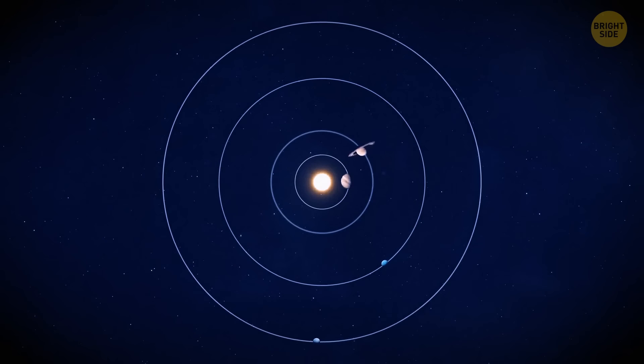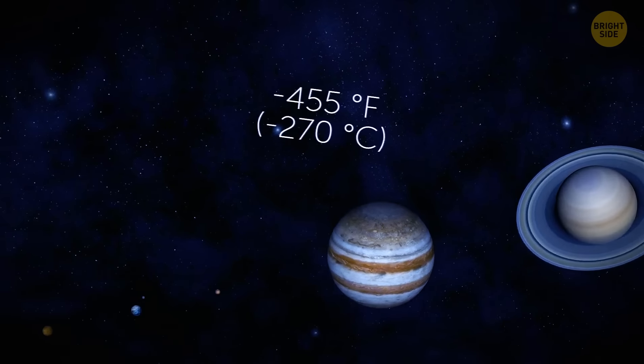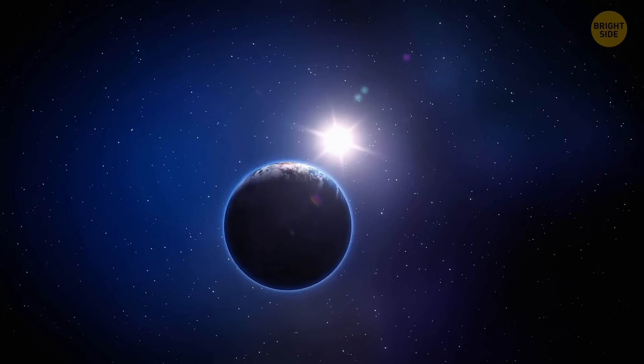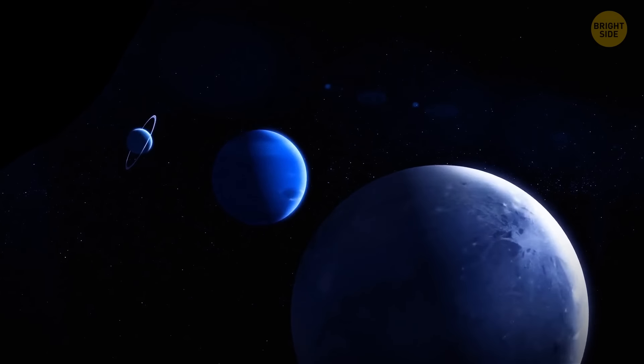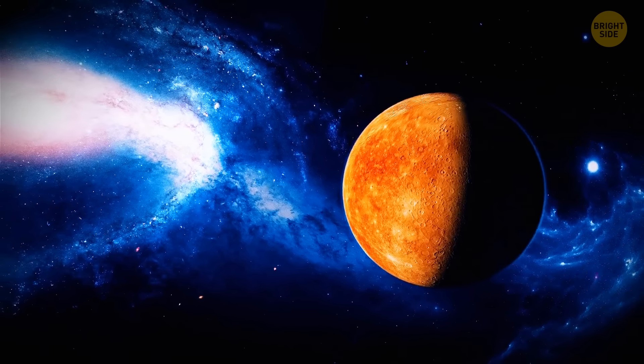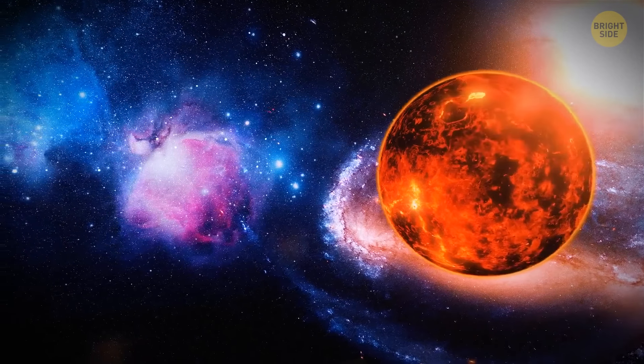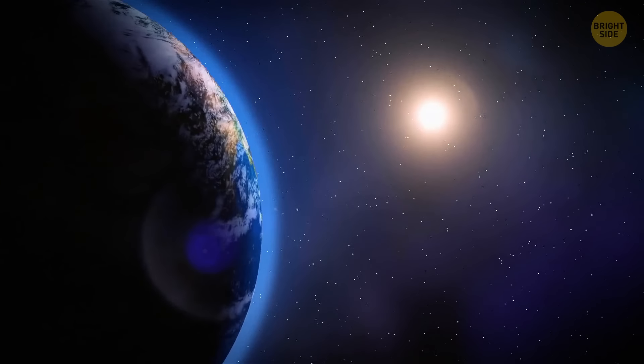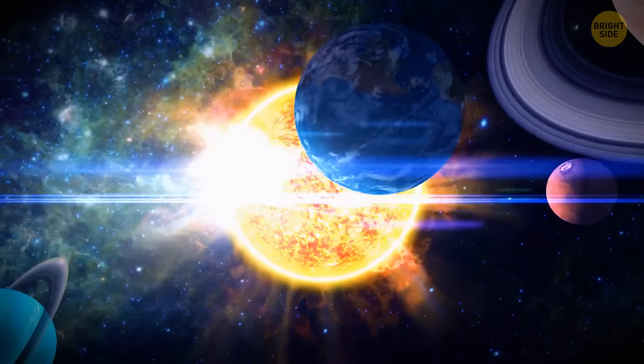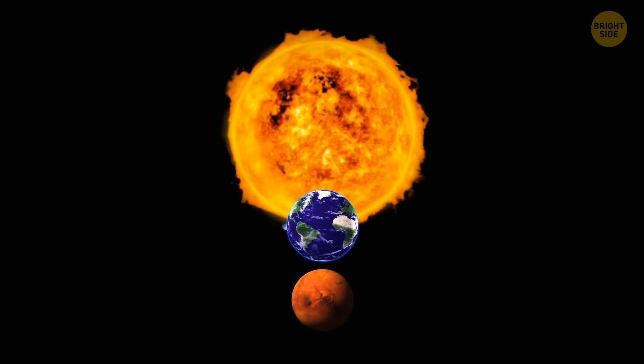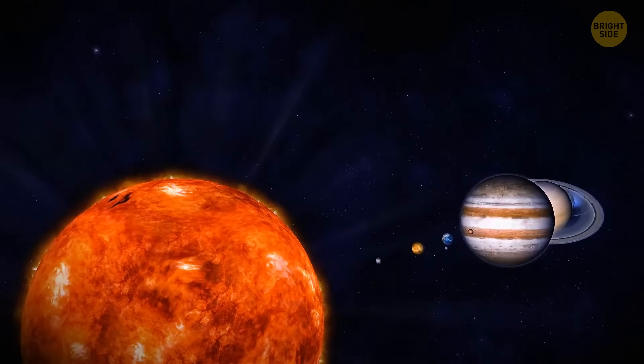Without the sun, planets would be pretty chilly. We're talking about temperatures as low as negative 455 degrees Fahrenheit. But with the sun around, the planets get to enjoy much more livable temperatures. Of course, not all planets are created equal. Mercury, for example, is the closest to the sun. Venus, on the other hand, is farther away, but somehow manages to be even hotter than Mercury. The distance from the sun isn't the only factor that affects a planet's temperature. Other things, like the planet's size and reflectivity, also come into play. So Mercury being the hottest planet in our solar system is a false proposition. No, just because it's the closest one to the sun doesn't mean it's the hottest.